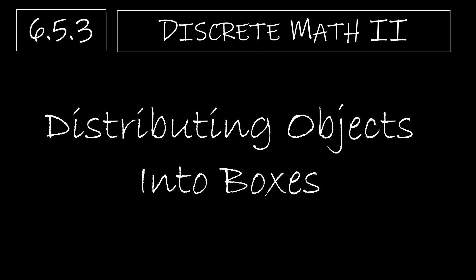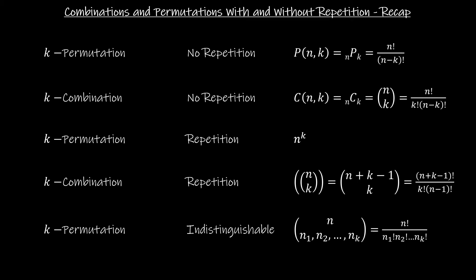This is our last video for section 6.5, distributing objects into boxes. This slide is a great recap, and I suggest you take a screenshot of it because it covers permutations without repetition, combinations without repetition, permutations with repetition with distinct objects, combinations with repetition, and permutations with indistinguishable objects. It's a great reference to come back to whenever you need to know which formula to use.